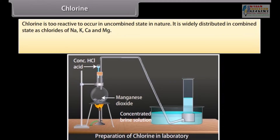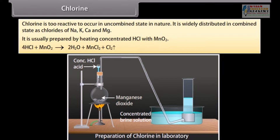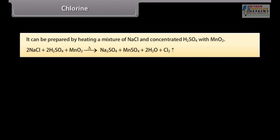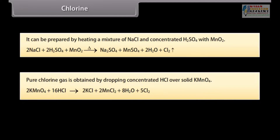Chlorine is too reactive to occur in the uncombined state in nature. It is widely distributed in combined state as chlorides of Na, K, Ca and Mg. It is usually prepared by heating concentrated HCl with MnO₂. It can also be prepared by heating a mixture of NaCl and concentrated H₂SO₄ with MnO₂. The gas is passed through water to remove HCl and then dried by passing through concentrated H₂SO₄. Pure chlorine gas is obtained by dropping concentrated HCl over solid KMnO₄.